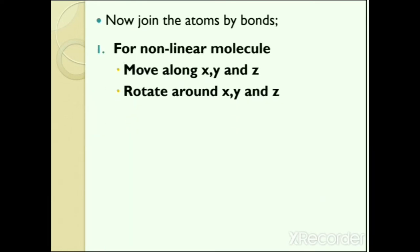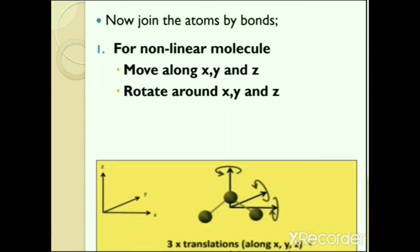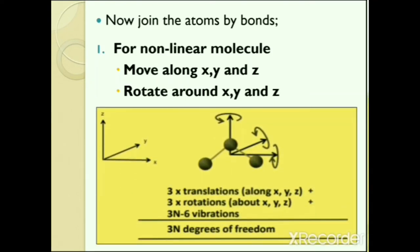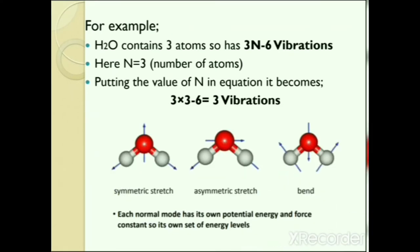For a non-linear molecule, atoms move along X, Y and Z and rotate around X, Y and Z, giving 3 translations, 3 rotations, and 3N − 6 vibrations. For example, a water molecule contains 3 atoms, so it has 3(3) − 6 = 3 vibrations: symmetric stretch, asymmetric stretch and bending vibration.